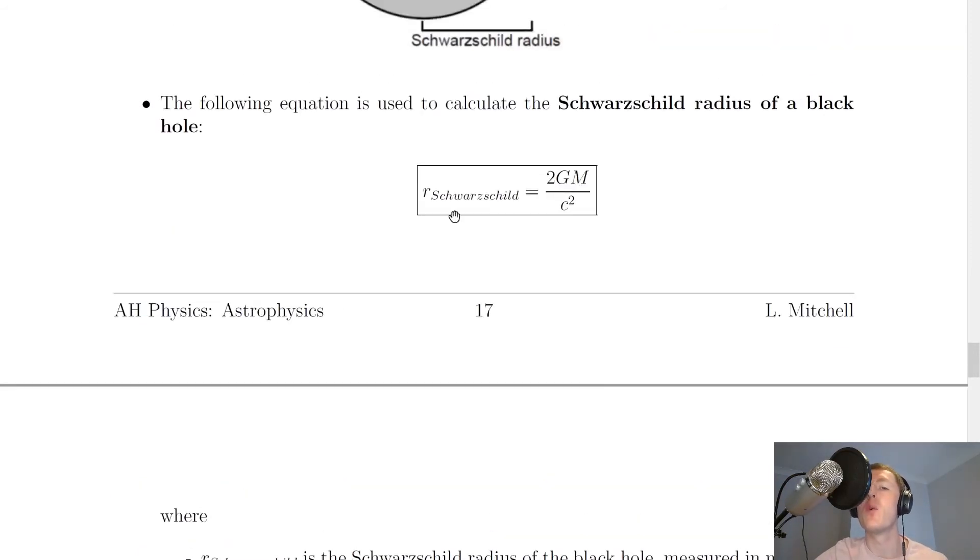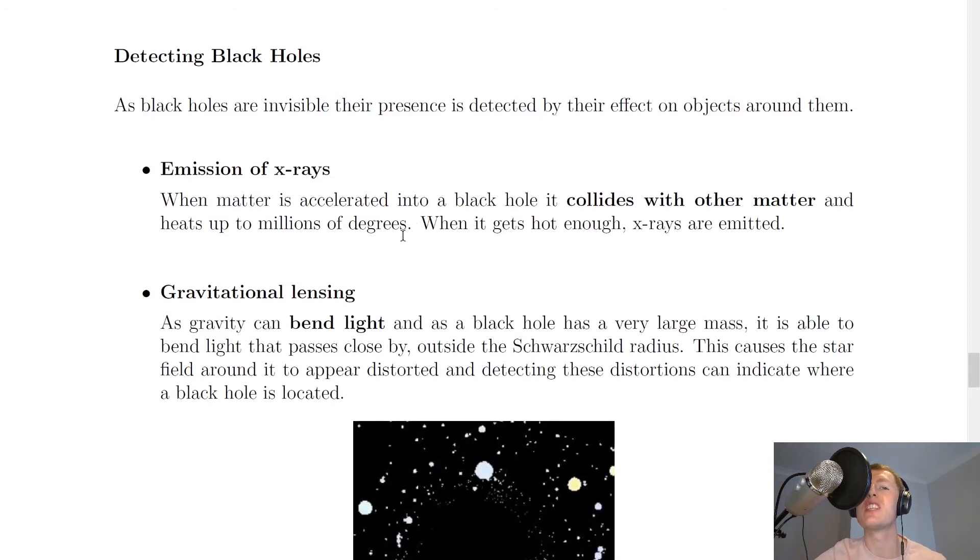Just to point out, if you don't want to write out Schwarzschild each time, you could simplify this to R subscript S. And lastly, we're just going to look at how to detect black holes. As black holes are invisible, their presence is detected by their effect on objects around them.